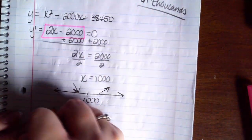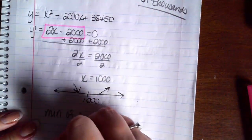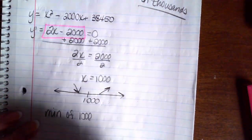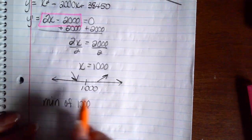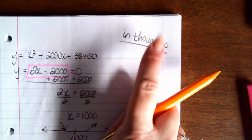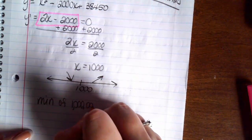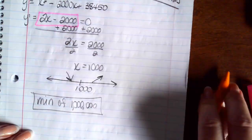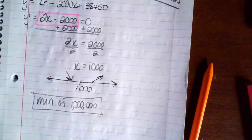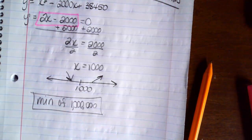So we have a minimum of 1,000 cell phones that will minimize this cost function. But remember, you're measuring in thousands. So you need to tack on an additional three zeros. So the number of units of cell phones that will minimize this cost function is 1,000,000.